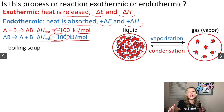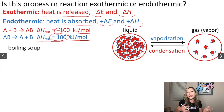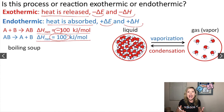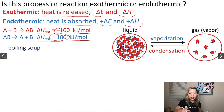Let's take a look at a couple more examples. How about boiling soup — is it an exothermic or endothermic process? When soup is boiling, it's going from a liquid to the vapor phase. You are making a gas basically, and you are heating up your soup on your stove, so you are putting energy into the soup. This means that heat is going to be absorbed, so we are going to have an endothermic process.